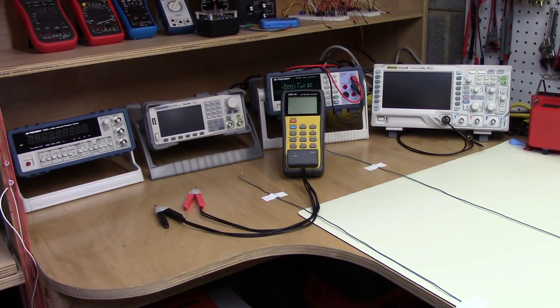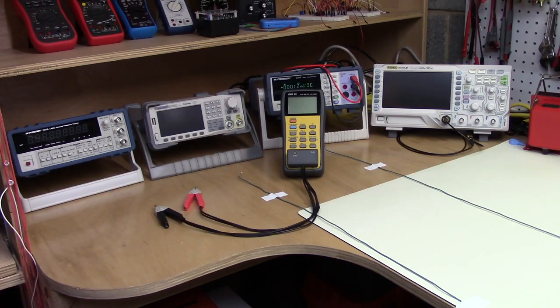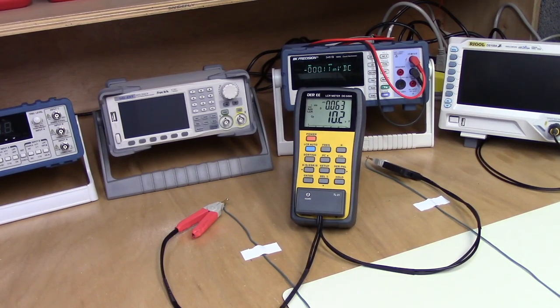We're going to hook up the LC meter and measure the capacitance. When we measure the wire using the DE5000 LCR meter, we get 10.2 picofarad. So that is the result for two meters of wire.